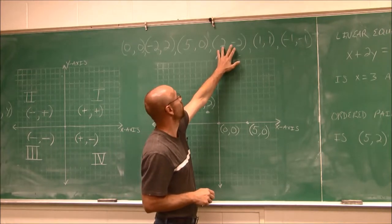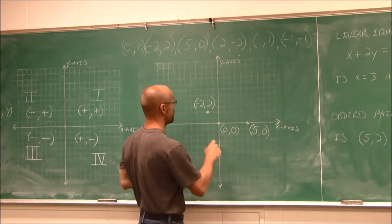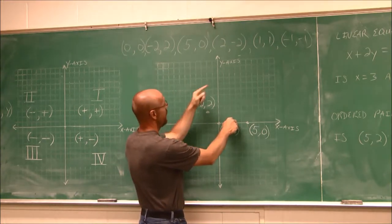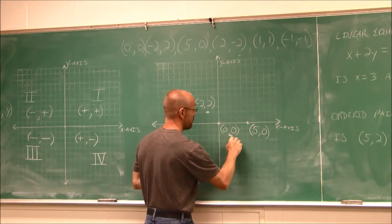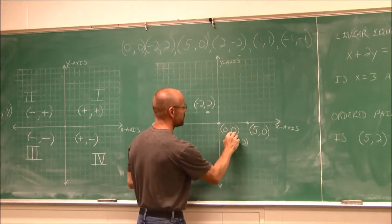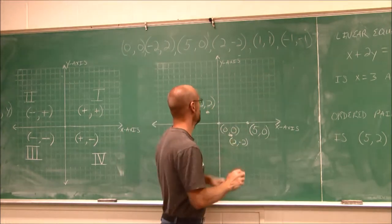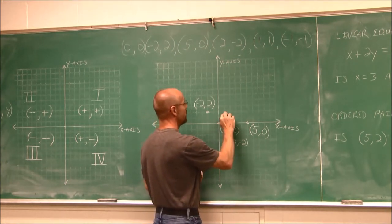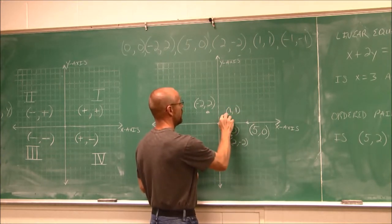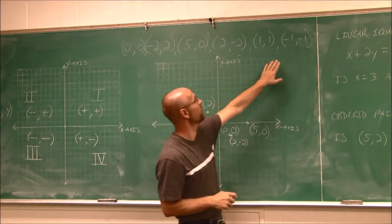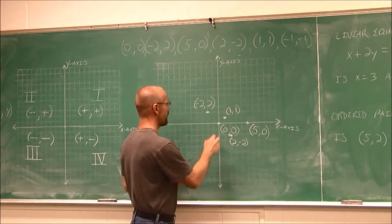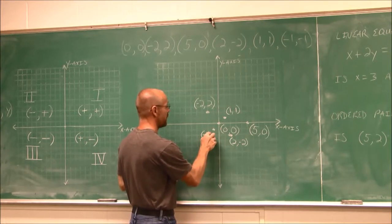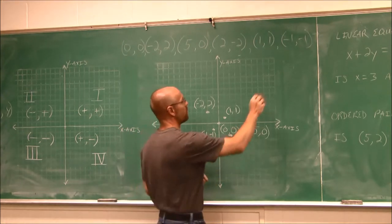Let's graph three more points. For (2, -2): that puts me 2 to the right in x and down 2 in y. I'll label that (2, -2). For (1, 1): I go 1 in the positive x direction to the right, and up 1 in y. So this is the value (1, 1). For (-1, -1): that tells me I go left 1 in x and down 1 in y. The ordered pair is (-1, -1).